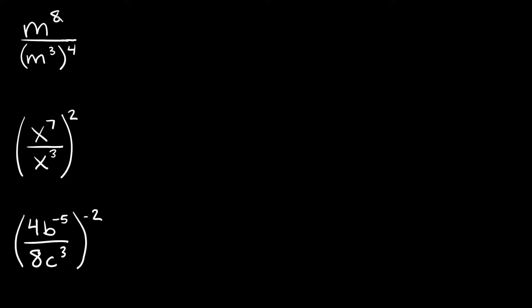We have m to the eighth over m cubed in parentheses, and then that's raised to the fourth power. You always want to simplify the top as much as possible and the bottom as much as possible before you try to do any type of division or cancel anything out.